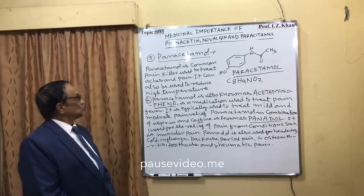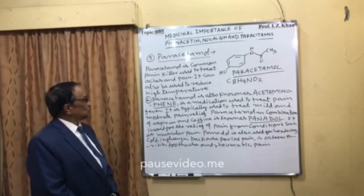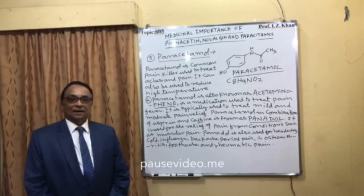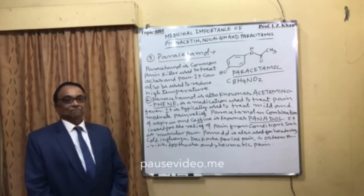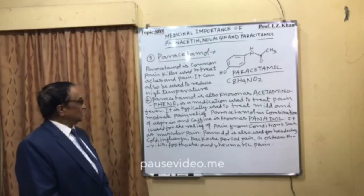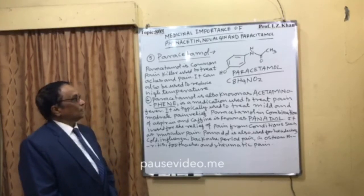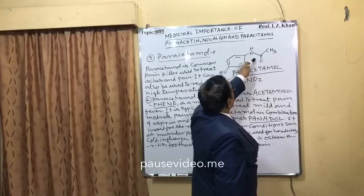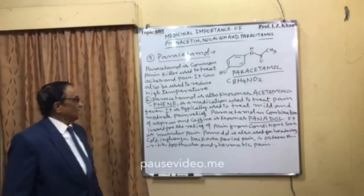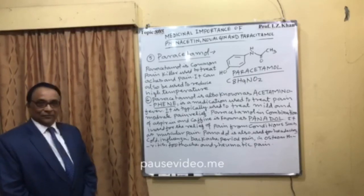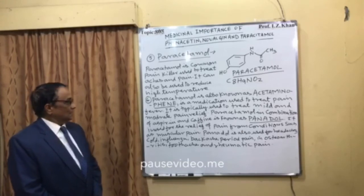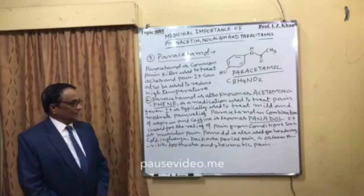Paracetamol is a common painkiller used to treat aches and pain. It can also reduce high temperature — for example, from 102–103°F down to normal (97–98°F). Paracetamol is also known as acetaminophen: acetyl group, amino group, and phenyl group. It is a medication used to treat mild to moderate pain and fever. Paracetamol in combination with aspirin and caffeine is known as panadol.